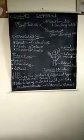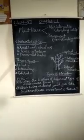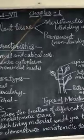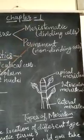Hello students, in today's class I am going to explain plant tissue. Plant tissue is of two types: meristematic tissue and permanent tissue.